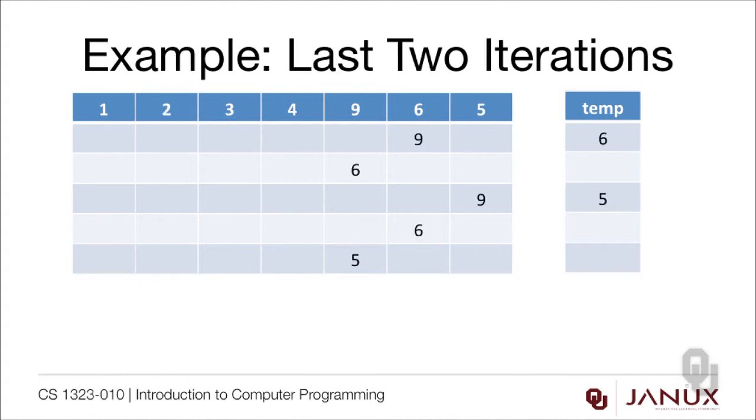Here are the last two iterations. 6 gets moved over to temp. 6 is smaller than 9, so it gets moved over. 5 gets moved over to temp. 9 is bigger than 5, and 6 is bigger than 5, so they get moved over.